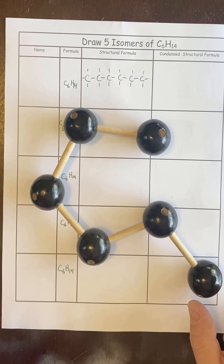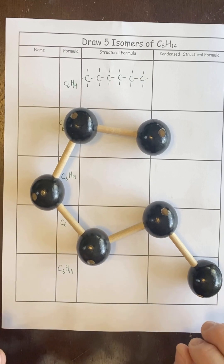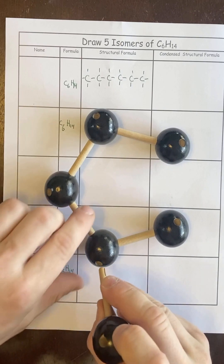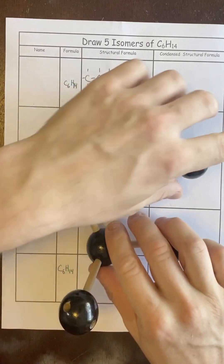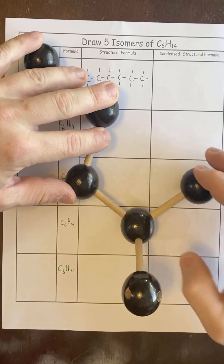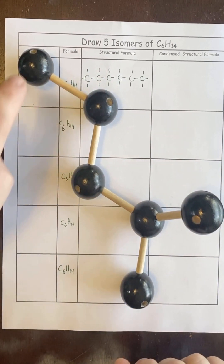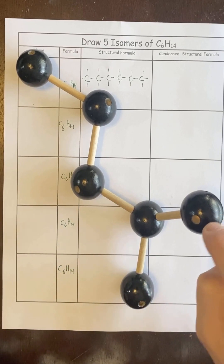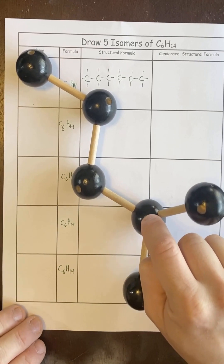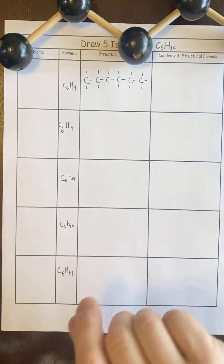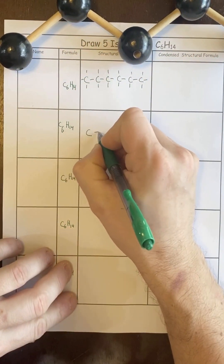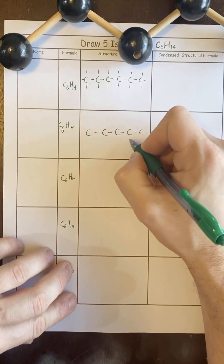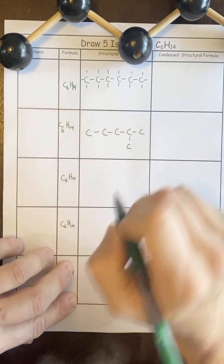To make an isomer, disconnect one from the end and move it in, typically one carbon in. Unfolding the model, this gives five in a row with a methyl group on the second carbon in from the branch. So this is an isomer — five in a row and then a branch going up or down.